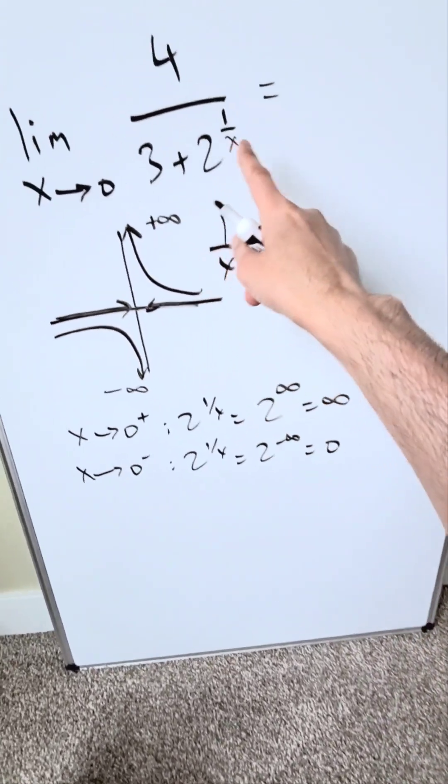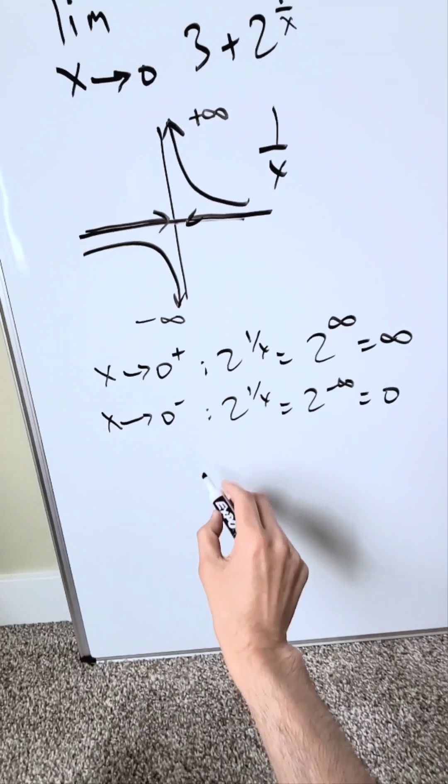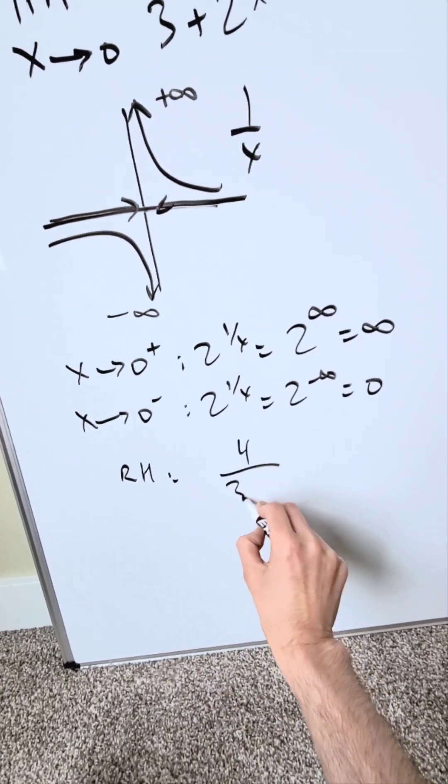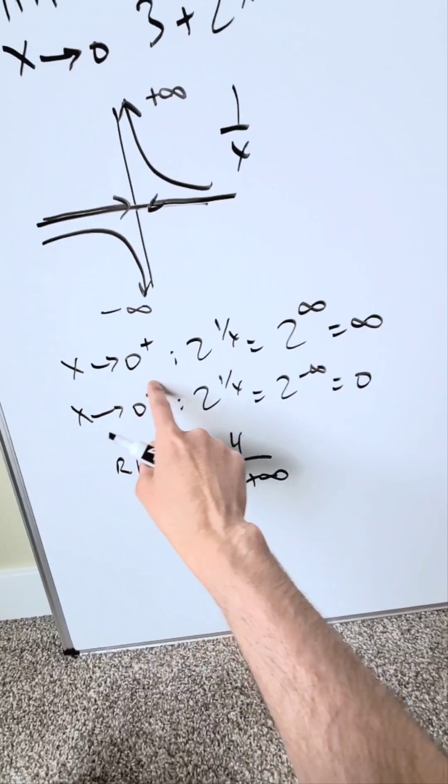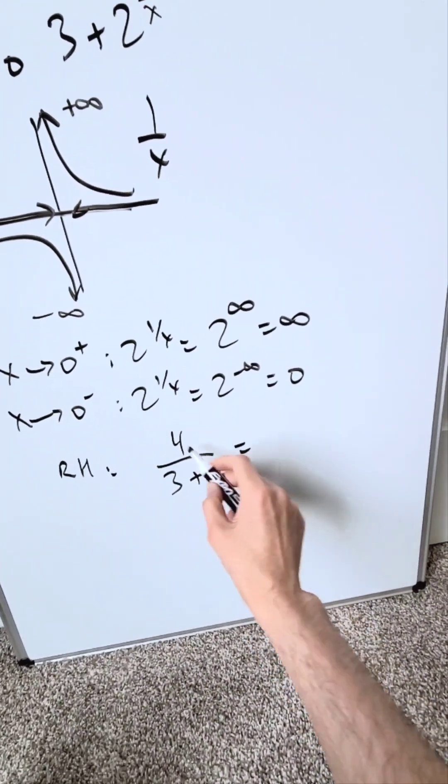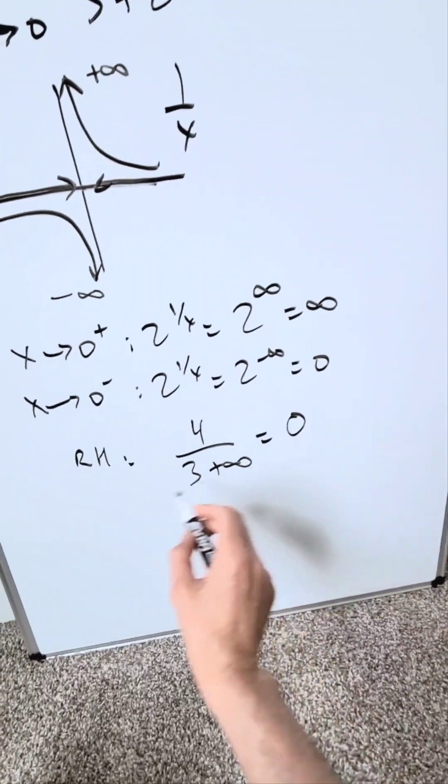You bring these items here into your original limit and see how it plays out. From the right hand side, you will have 4 divided by 3 plus infinity, because we know from the right hand side we're looking at infinity come in place of that 2 to the 1 over x. This right here will be 4 over infinity and it's zeroing out.